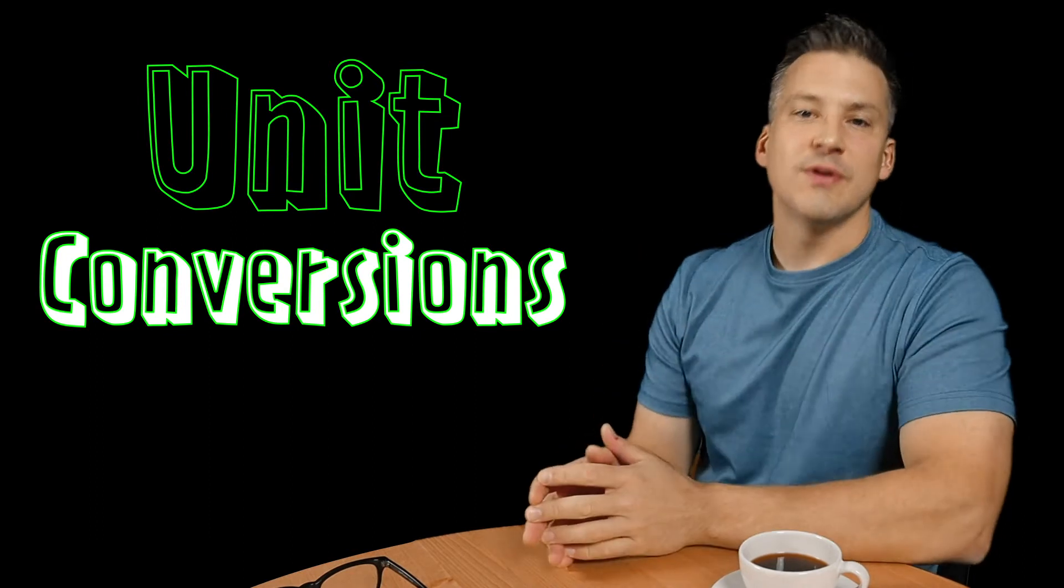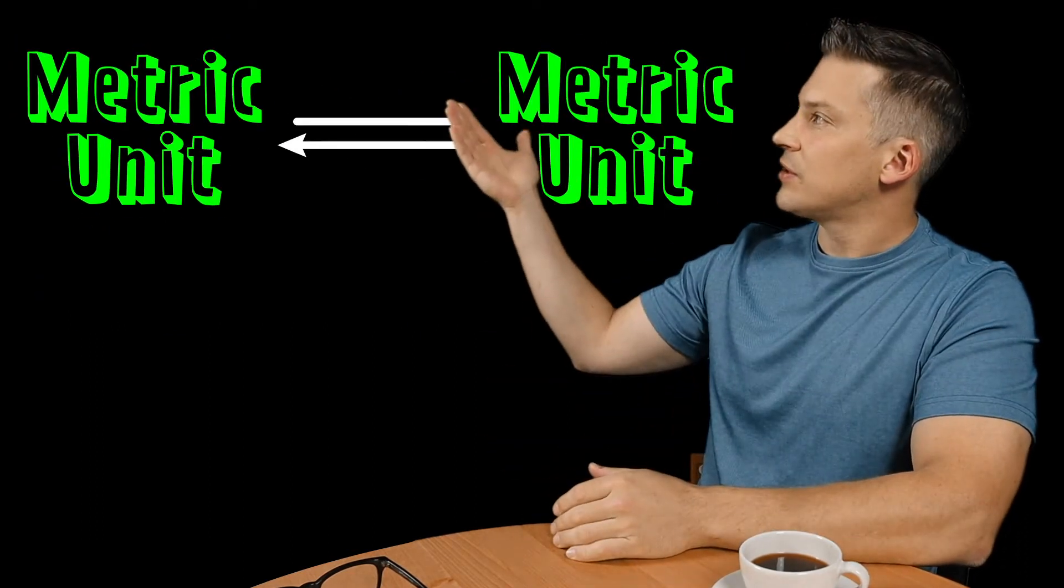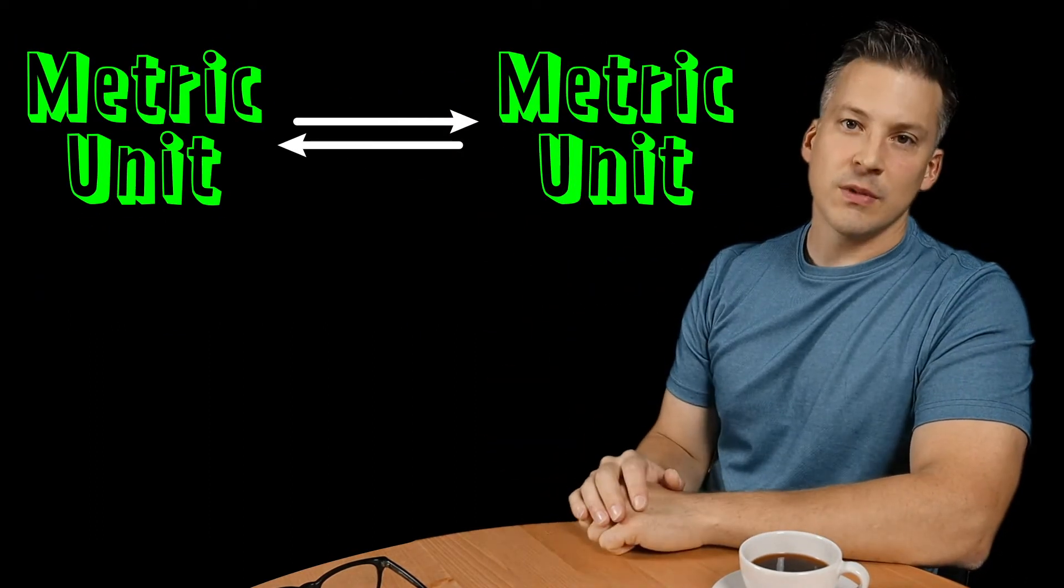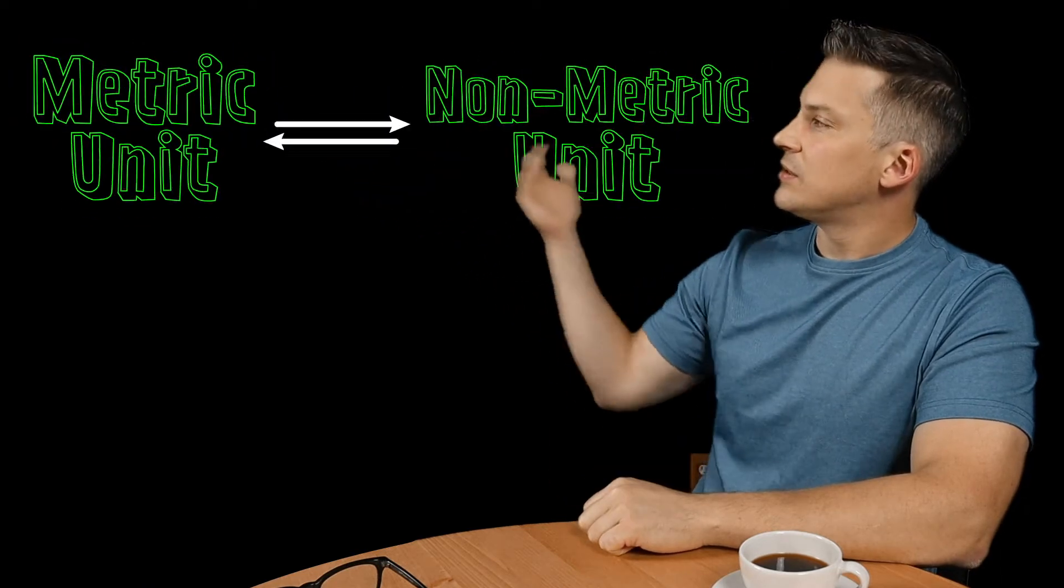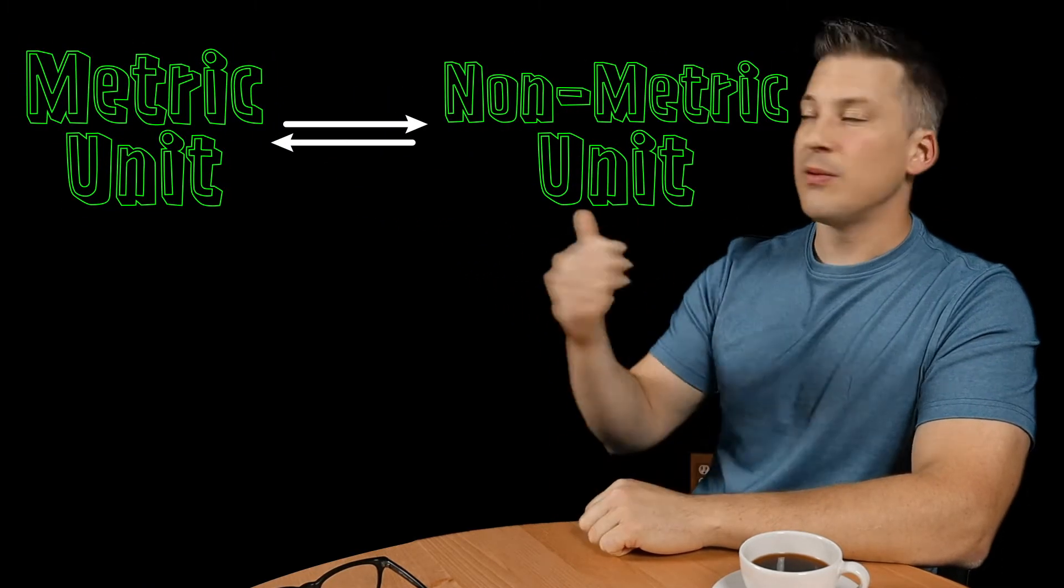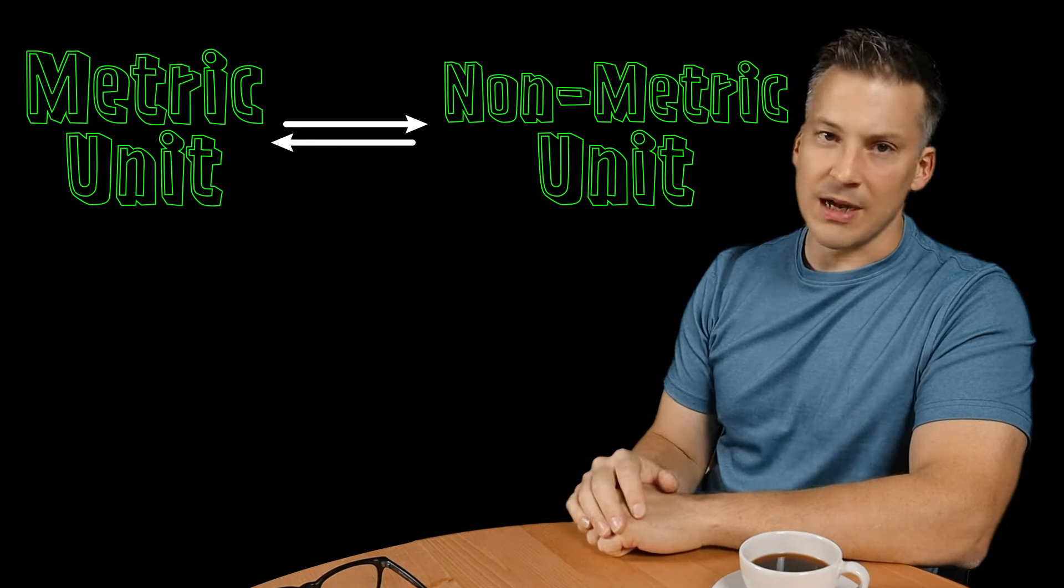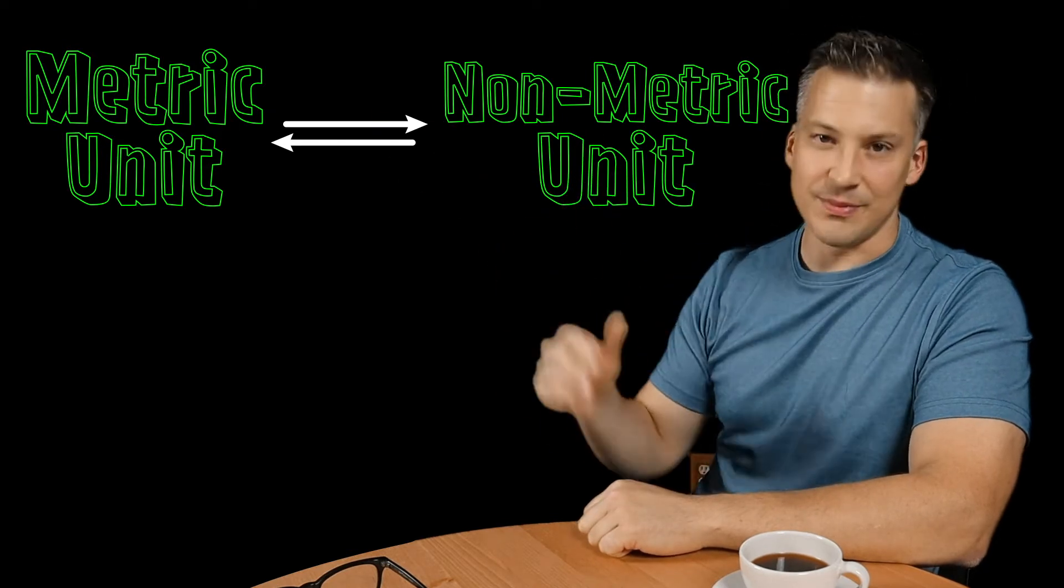So we have two basic types of unit conversions. There's a metric-to-metric unit conversion, and there's also a metric-to-non-metric unit conversion. And by the way, you can go backwards as you can see the double arrow there. You can go from non-metric back to metric of course.